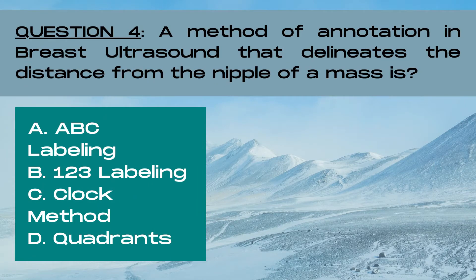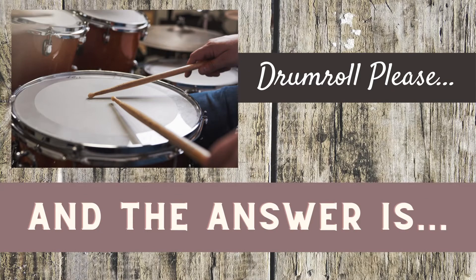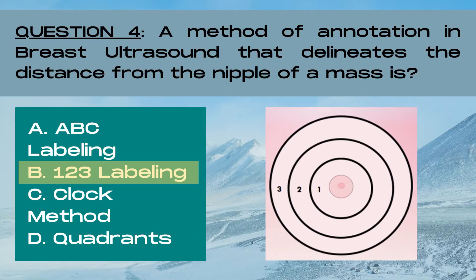Question 4. A method of annotation in breast ultrasound that delineates the distance from the nipple of a mass is: A ABC labeling, B 123 labeling, C clock method, or D quadrants? The answer is B, 123 labeling. For the 123 labeling method, concentric circles are drawn around the breast and it is divided into three sections: section 1 is close to the nipple, section 3 is far away from the nipple, and section 2 is halfway between the nipple and the periphery of the breast. The 123 labeling method is used as a general way to describe the distance of a mass from the nipple.